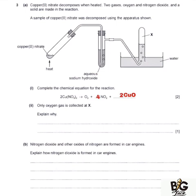For oxygen, on the products we have 12 atoms of oxygen: the 2 on copper 2 oxide gives 2 moles of oxygen, then 4 multiplied by 2 on nitrogen dioxide gives 8, plus 2 atoms from oxygen gas — that's 12. On the reagents, 2 multiplied by 3 gives 6, then 6 multiplied by 2 on copper gives 12. So oxygen is balanced.